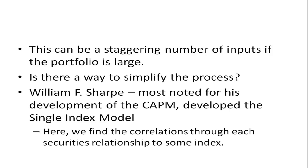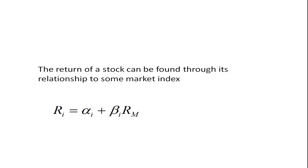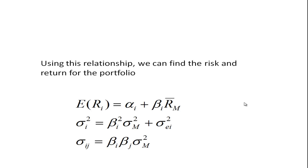Many mutual funds have well over 100 stocks — sometimes 300, 500, or even 1,000. William F. Sharpe, most noted for developing the Capital Asset Pricing Model, for which he won the Nobel Prize in Economics in 1990, developed the single index model. Instead of using a direct relationship between each pair of securities, he found the relationship through their connection to some index. He starts with the equation: ri equals alpha i plus beta i times rm, which is a basic regression equation. Taking the expected value gives expected ri equals alpha i plus beta i times the expected return of the market.